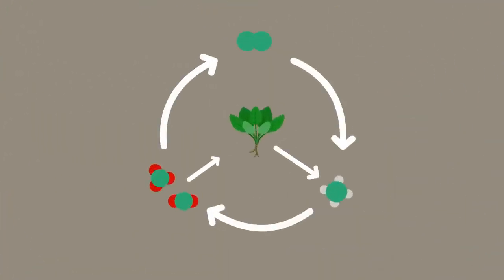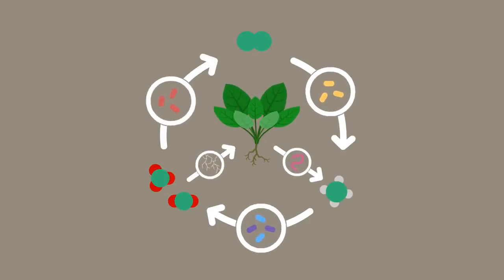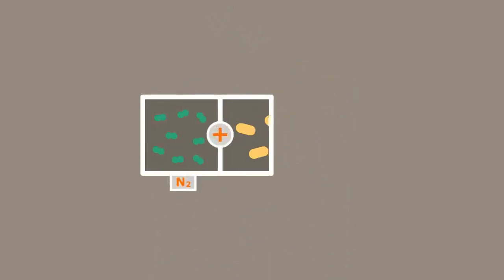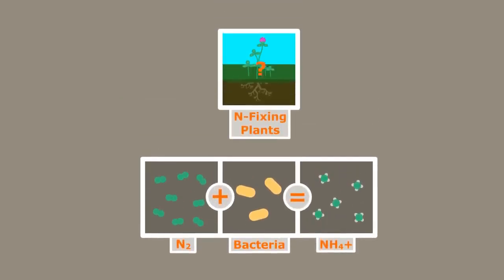Ok, so we know that the nitrogen cycle depends heavily on life in the soil. Without them, the plants would be quite sad. But you may have noticed, if the fixation process is done by bacteria, where do nitrogen-fixing plants fit into this?